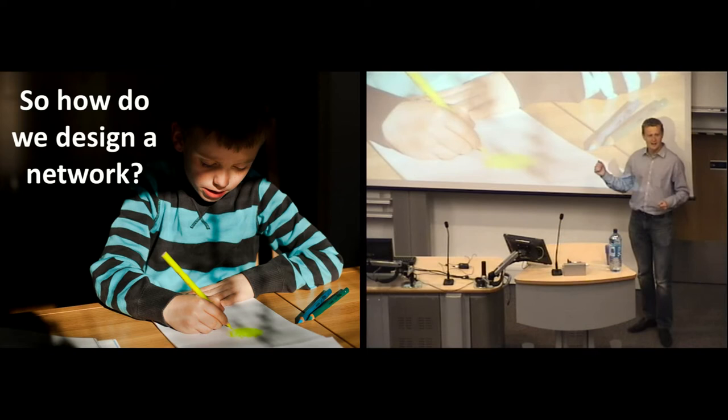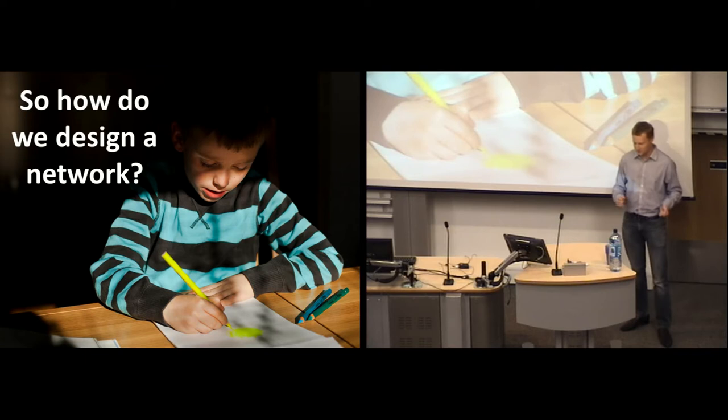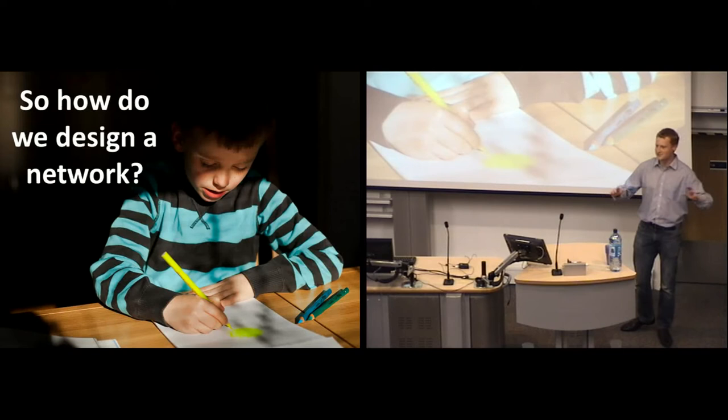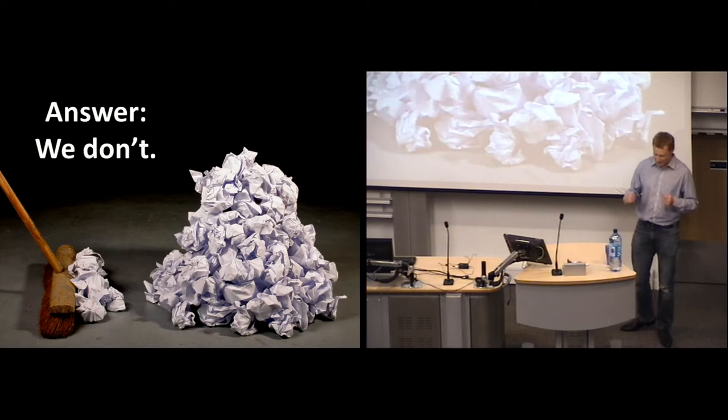So how do we design a network? Well, the simple answer is that usually we don't. Take the measles outbreak in Wales recently — there was no one deciding who was going to come into contact with whom and who was going to get measles. So normally networks just appear and then we have to try and control them as best we can.